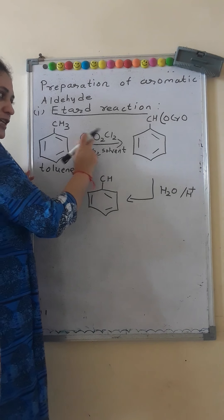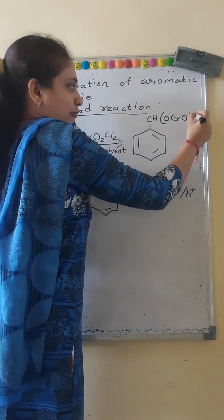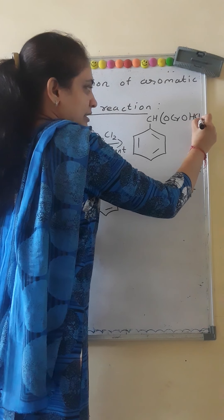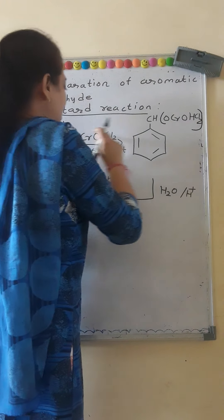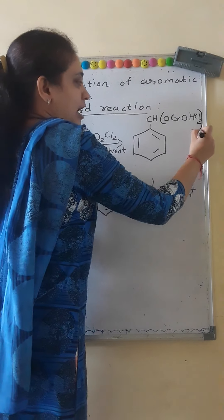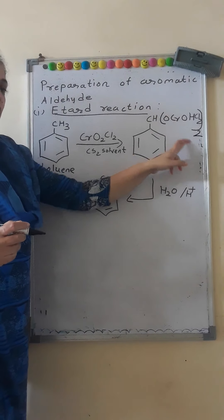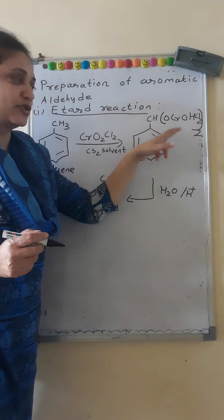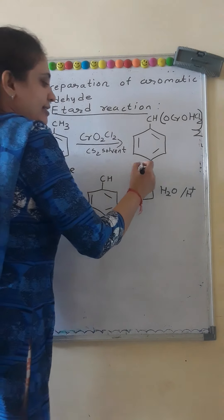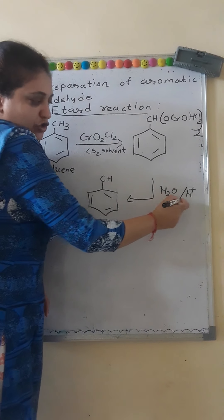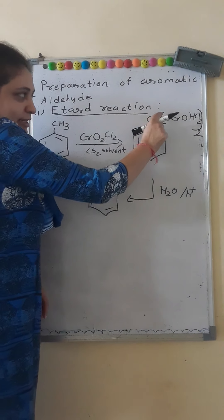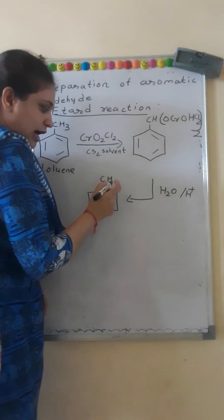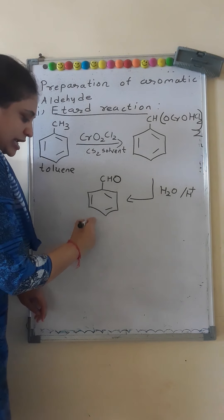CrO₂Cl₂ is written as O-CrO; then one of the H gets added. There are two chlorine atoms, and as there are two H replaced, we write it outside the bracket twice — so CH(O-CrO·CrO₂Cl₂)₂. This is the adduct form, which on hydrolysis decomposes and oxygen bonds to carbon, giving us benzaldehyde.